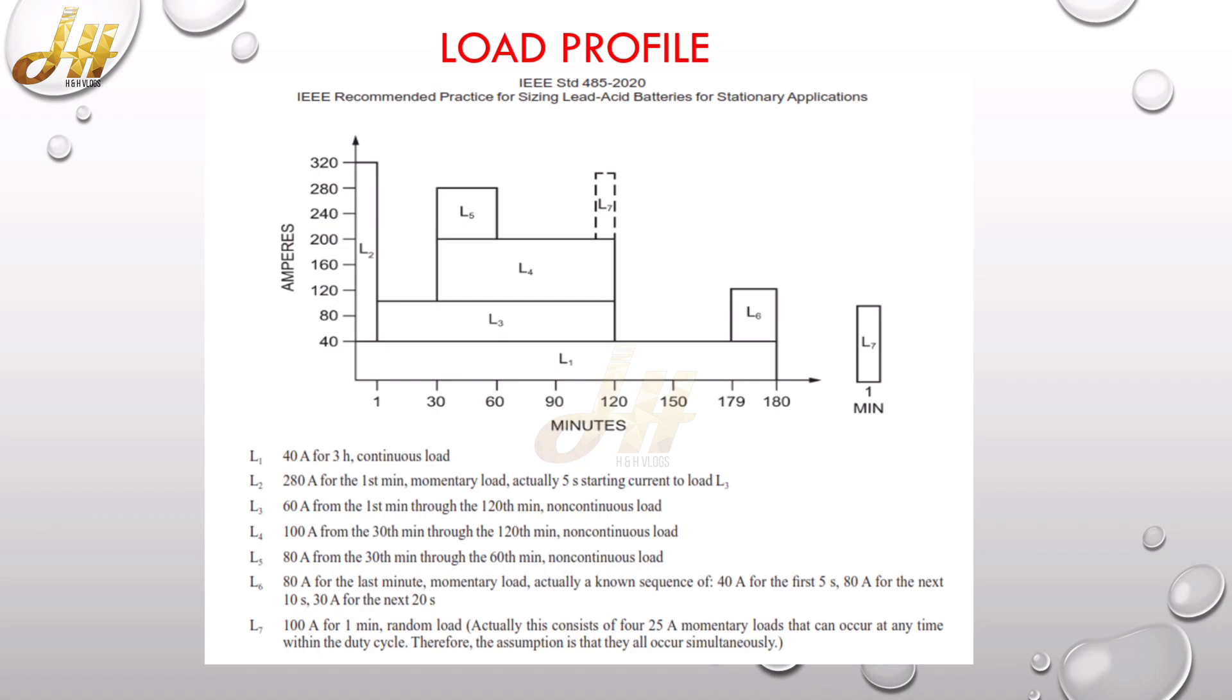L6 is 80 ampere, and another load which you are seeing is L7, which is a random load. This can occur at any point of time in this specific period cycle. Here they mentioned 100 ampere for one minute as the random load, so this will be calculated separately.